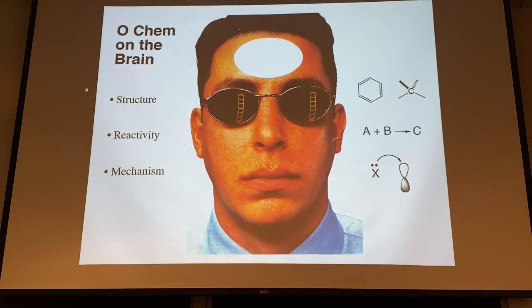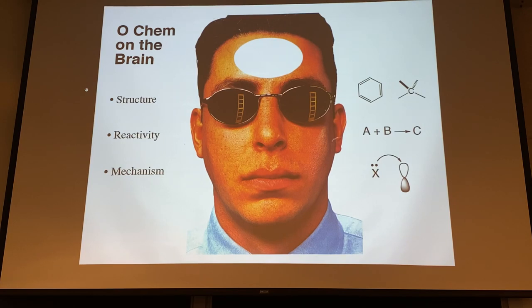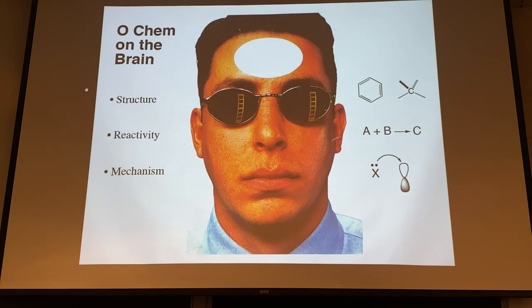Here's how organic chemistry works - three main ideas you need to keep straight. First: structure. We just reviewed hybridization - sp3, sp2, sp - giving tetrahedral, trigonal planar, and linear geometries. You need these down very well because structure relates to the shape, properties, and reactivity of the molecule. Second: reactivity - A plus B goes to C. Know what starting materials give what products.